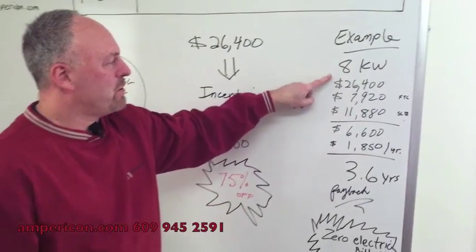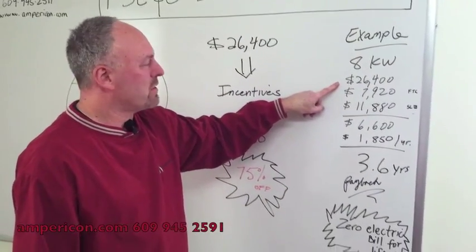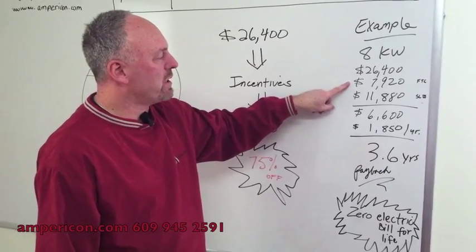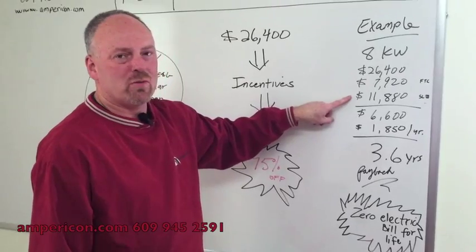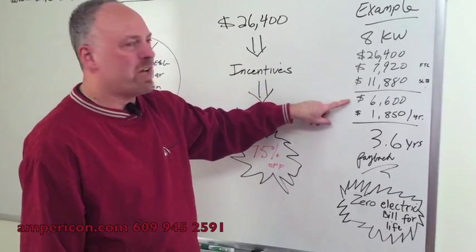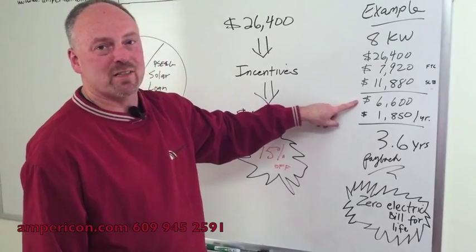System 8KW for $26,400. Federal tax credit, $7,920. Solar loan, three proceeds of $11,880. Your net out-of-pocket is only $6,600.